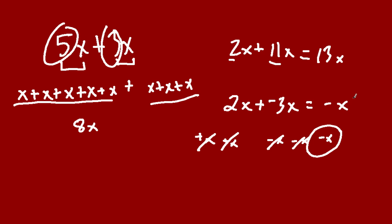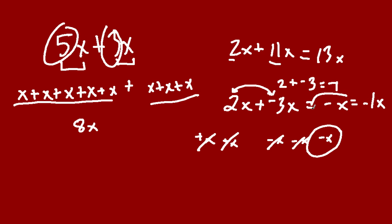Minus x is just short for minus 1x. And that makes sense — I've been saying that you add the coefficients. Well, 2 plus negative 3 is negative 1. So 2x plus negative 3x is negative 1x, or negative x.